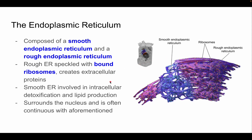The smooth endoplasmic reticulum has a trabecular shape and does not have any ribosomes. It's primarily involved in intracellular detoxification and lipid production for the lipid bilayer. It surrounds the nucleus and is often continuous with it.